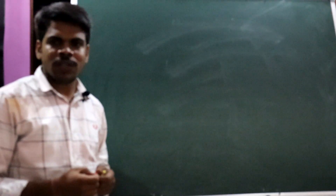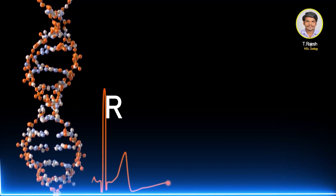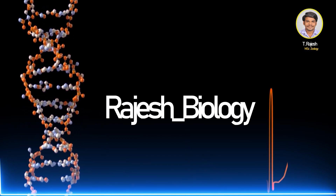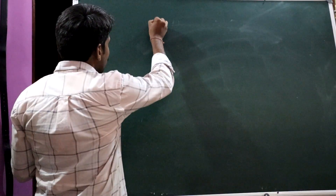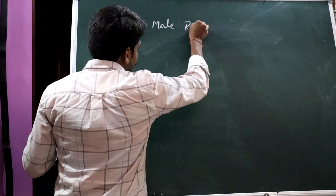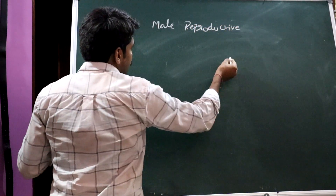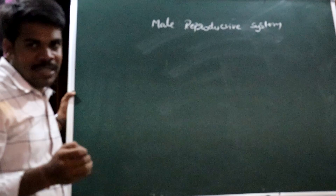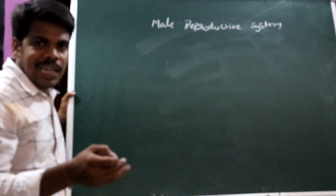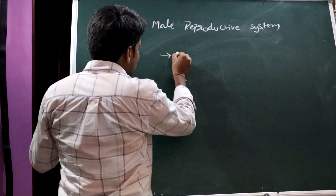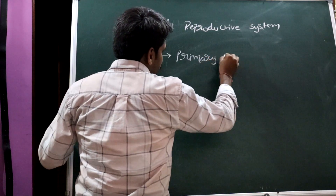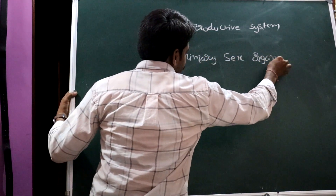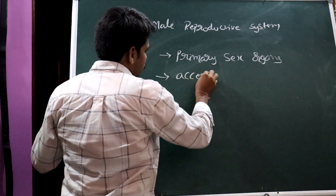Hello, dear students. Welcome to our channel Rajesh Biology. I am Rajesh. Today the topic is the male reproductive system. We will discuss the organs present in it. The male reproductive system mainly consists of primary sex organs, which are the testes, accessory ducts, accessory glands, and external genitalia.